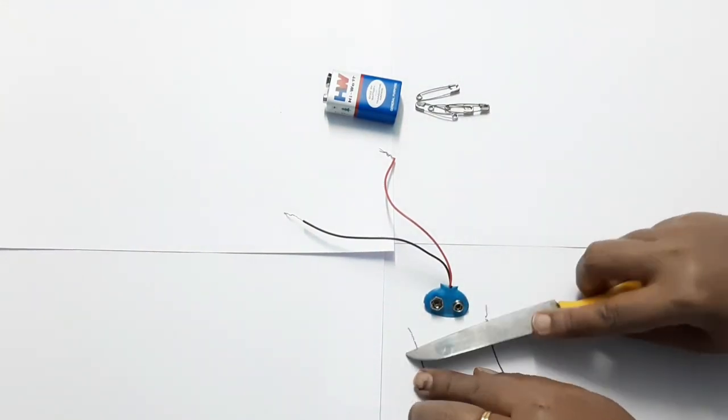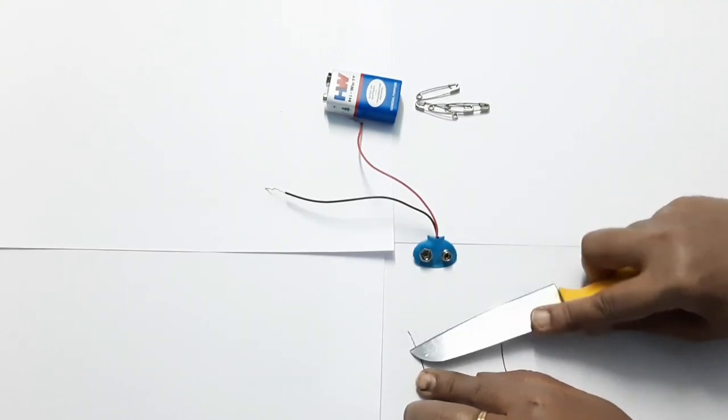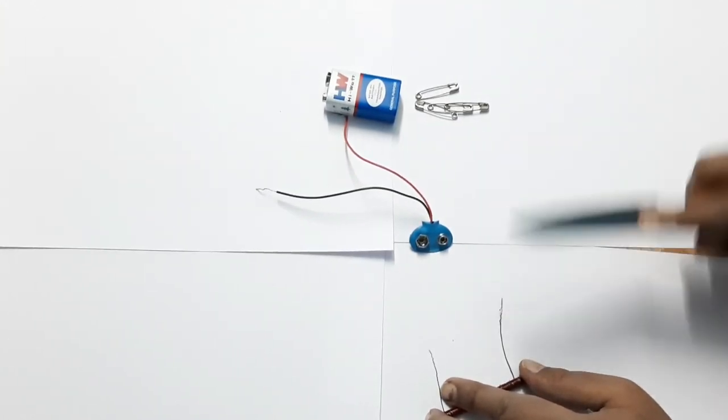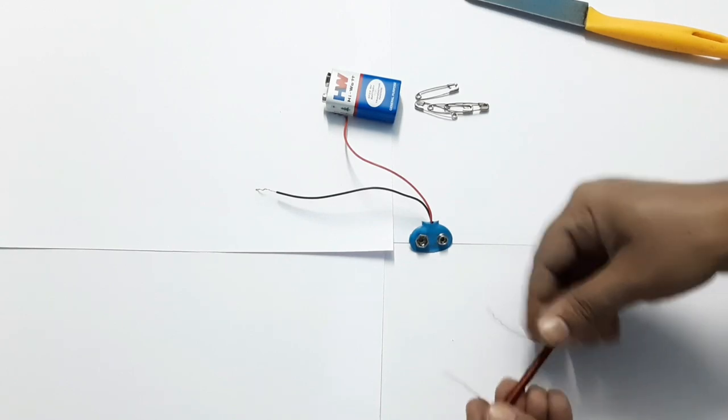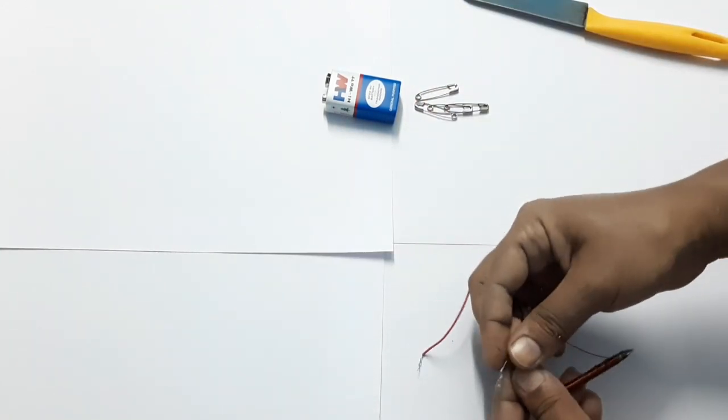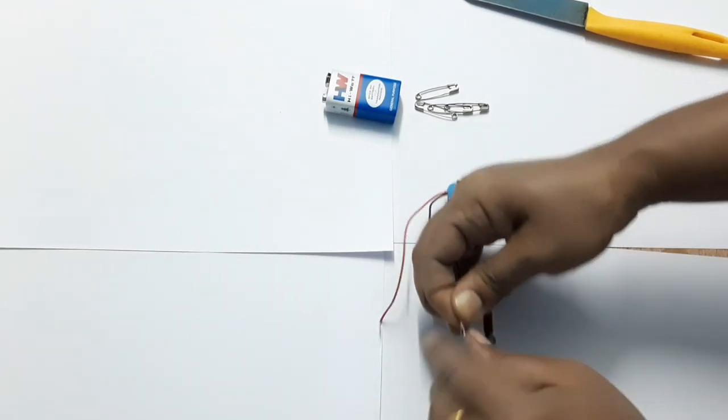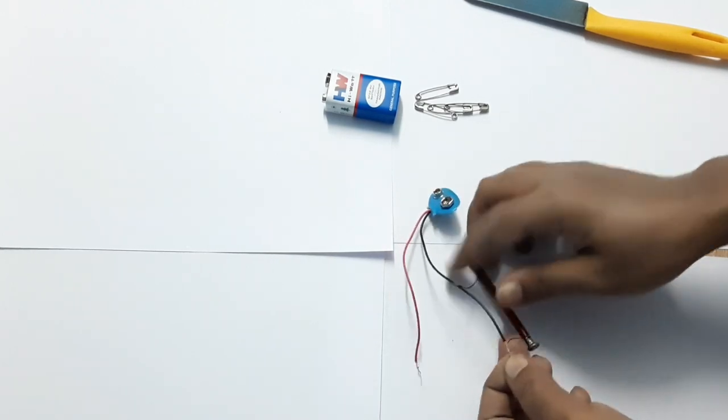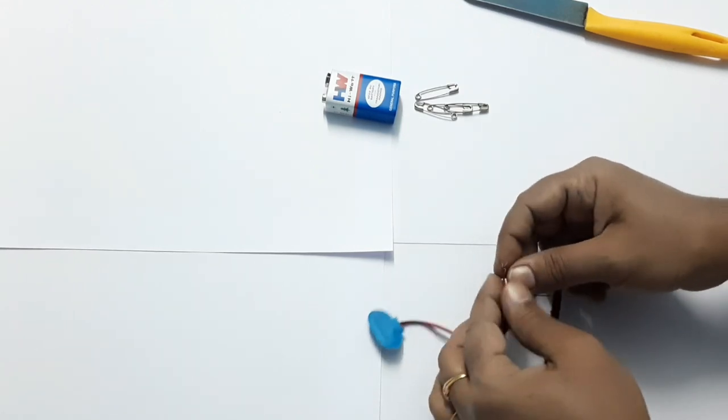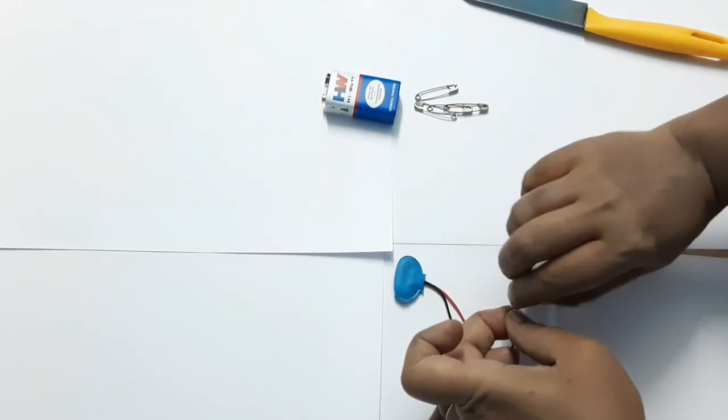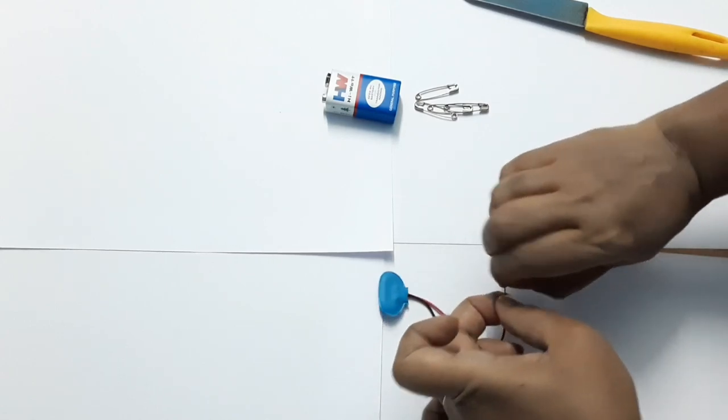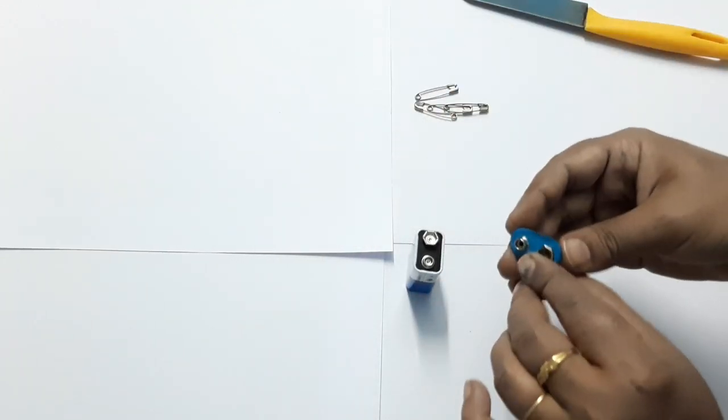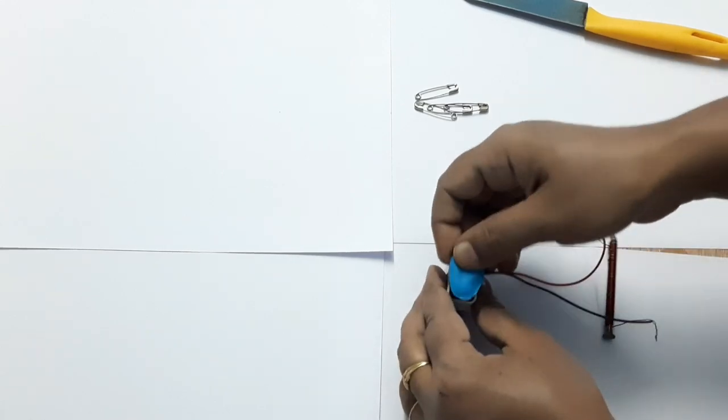Now remove the insulation from the edges. Connect this one with the battery. Now your electromagnet is going to be ready for use.